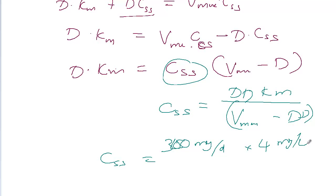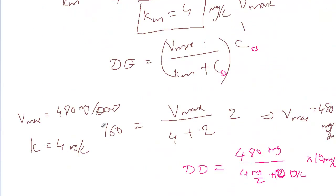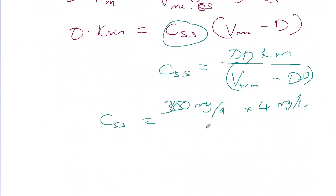If we did not remember, watch the previous video. Km is 4 mg per liter and Vmax is 480 mg per day. Divide by Vmax, 480 mg per day, minus the daily dose, 300 mg per day.